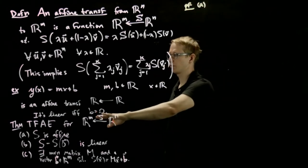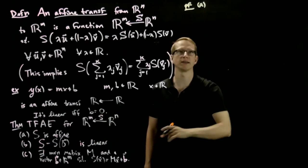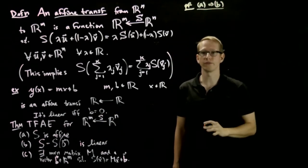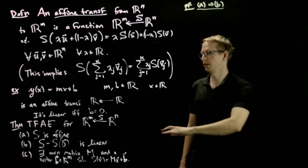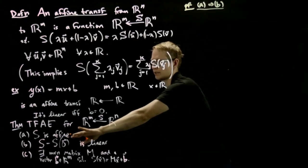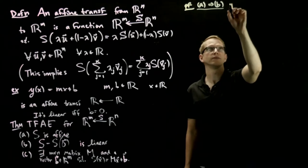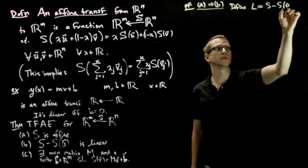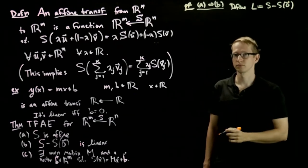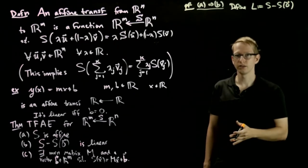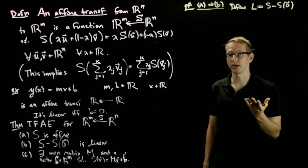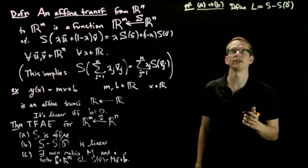We'll prove this by proving a implies b implies c implies a. So for the first part of this proof, we're going to define, I don't want to keep writing s - s(0), so we're going to define L to be this function s - s(0). And the goal is to prove that this function is linear.